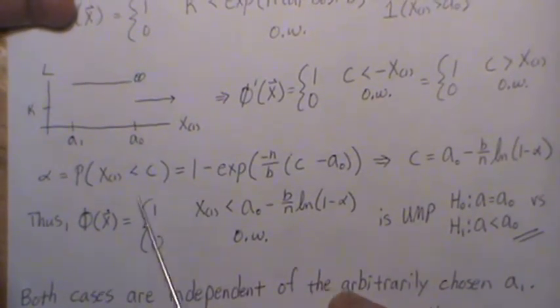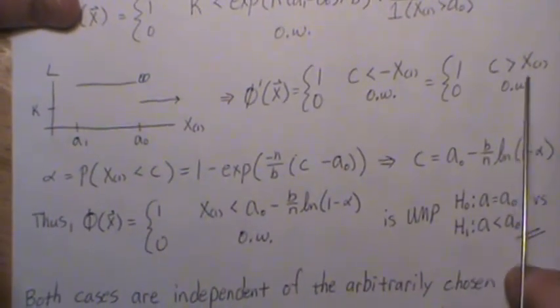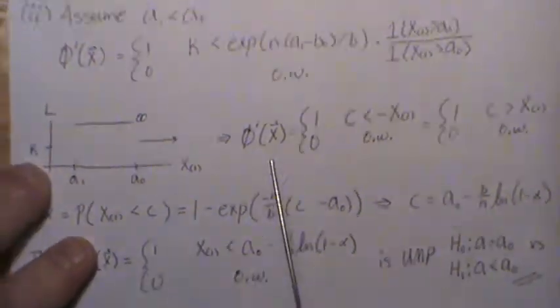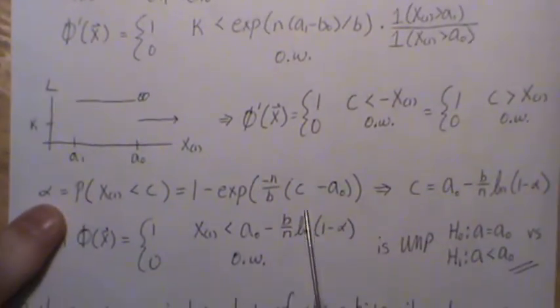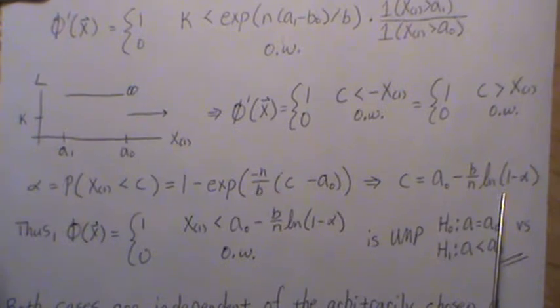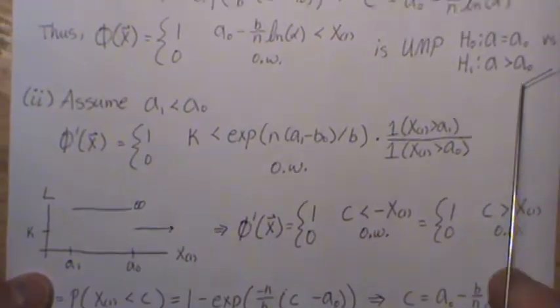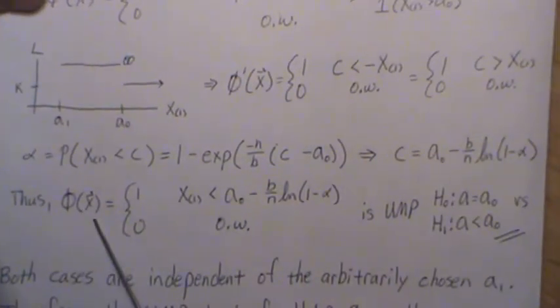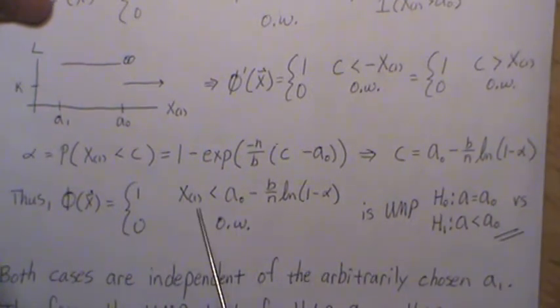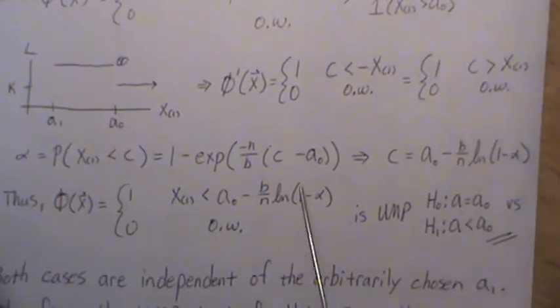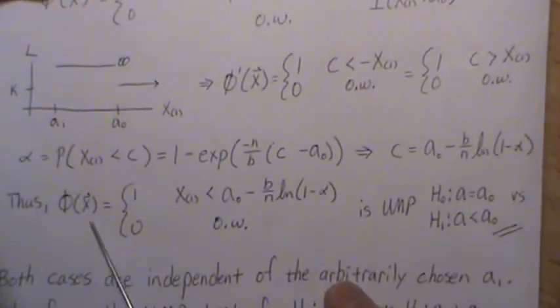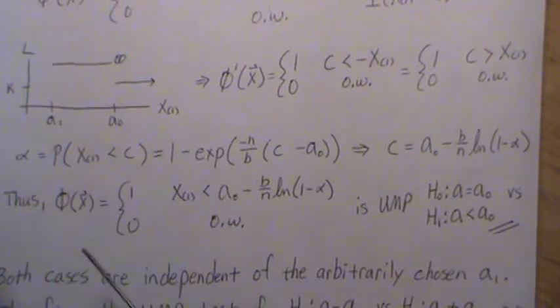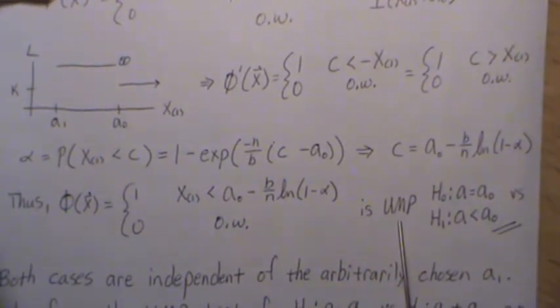To solve for c, alpha equals the expected value of the test function, which is just the probability that X(1) is less than c — that's the CDF evaluated at c. Setting this equal to alpha and solving for c gives a value similar to before, except here it uses alpha directly rather than one minus alpha. Thus the most powerful test rejects when the minimum order statistic is less than this constant, and there is no A1 in the expression — so the rejection region is independent of the arbitrarily chosen A1. This makes it a uniformly most powerful test for A equals A-naught versus A less than A-naught.